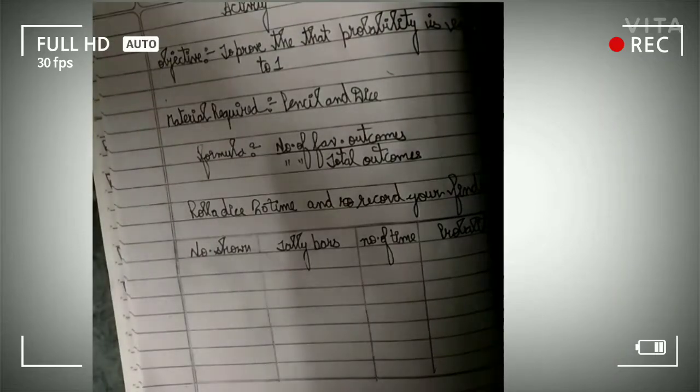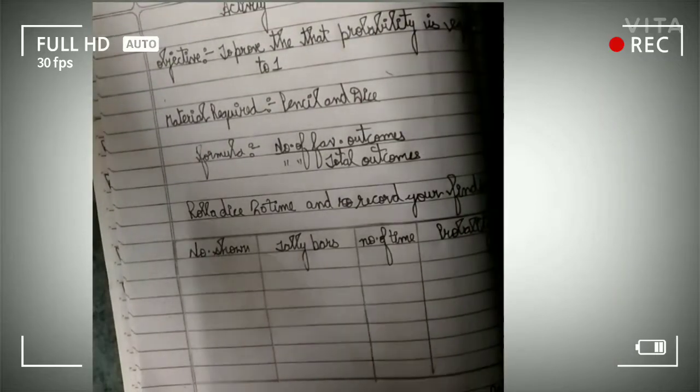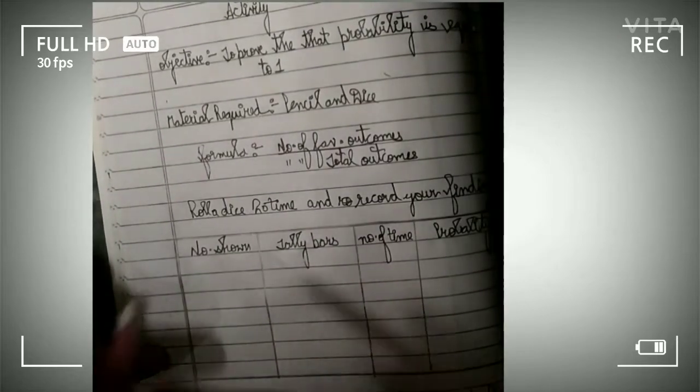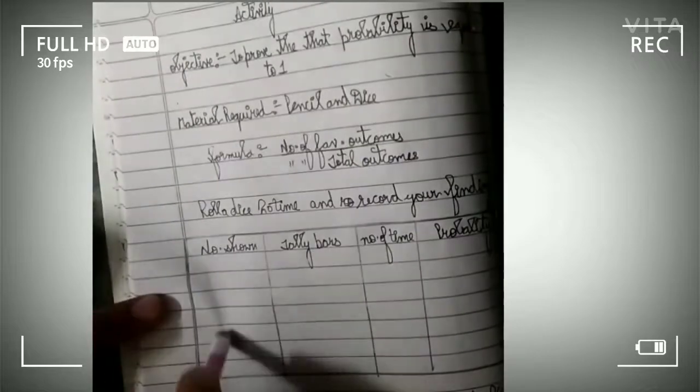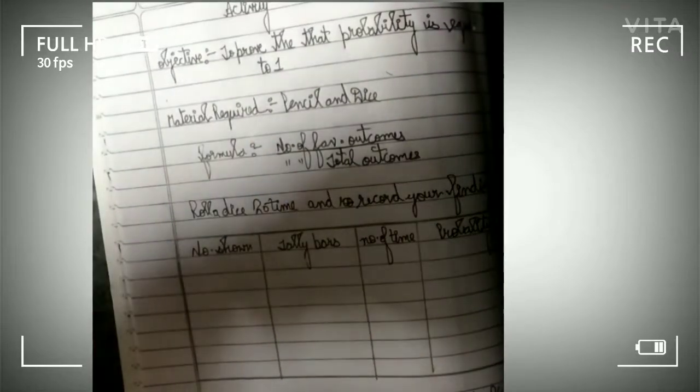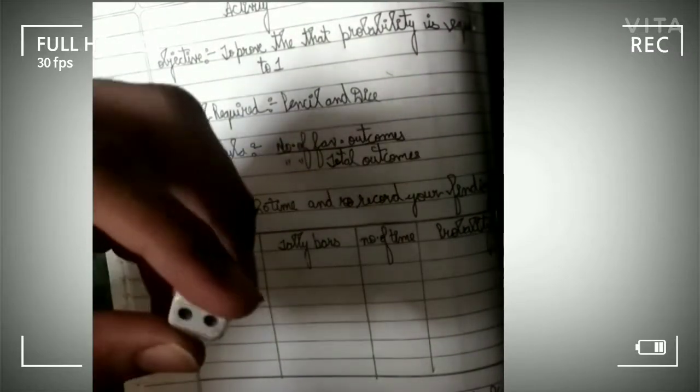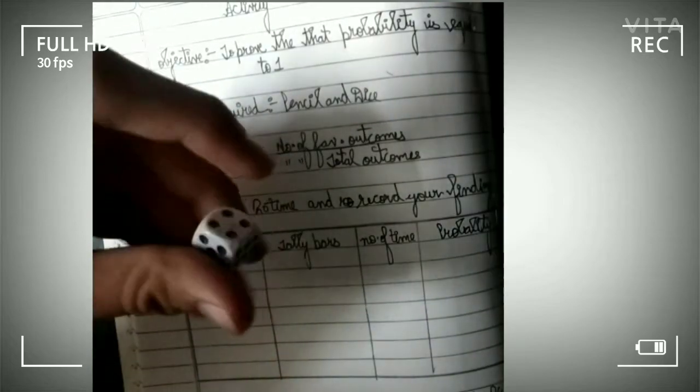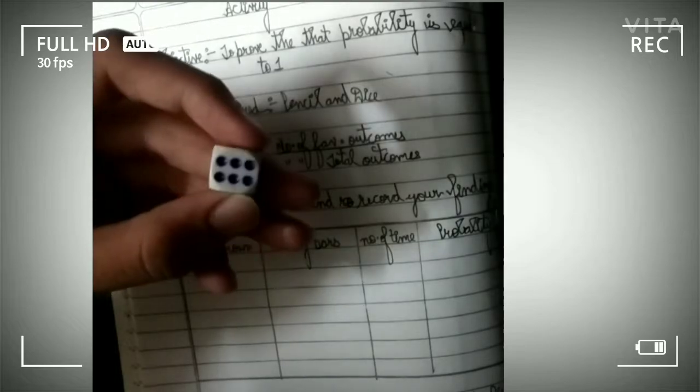So guys, now we have to take a dice and we have to evaluate it 20 times to fill this table. Number shown means the faces dice have. Dice have 6 faces: 1, 2, 3, 4, 5, and 6.